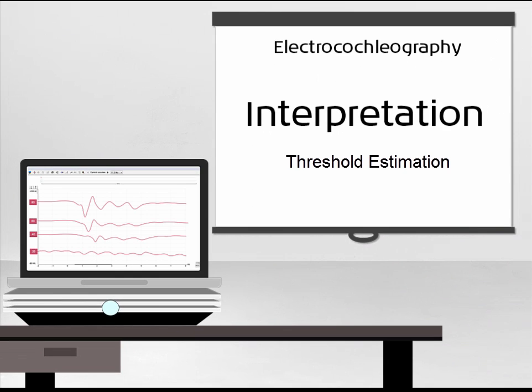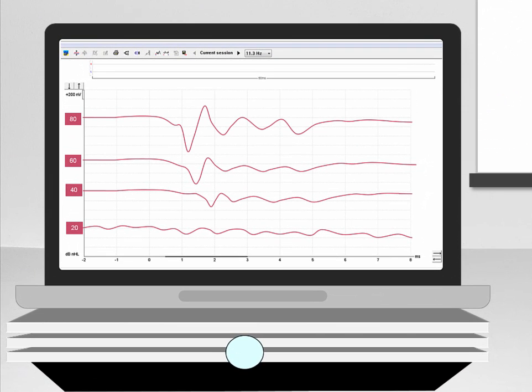Lastly, ECOG can be used to estimate a person's hearing threshold. When this is the aim, the clinician will typically track the compound action potential and reduce the intensity of the stimulus until the compound action potential vanishes.